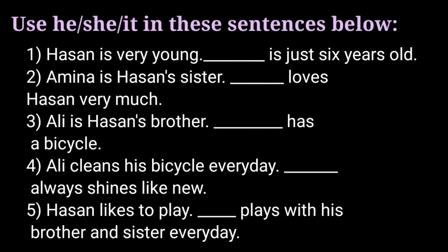See here. First question: Azan is very young. Dash is just 6 years old. Azan is the name of a boy. We know that if it is a boy, we have to use he. We use he for a man or a boy. So Azan here is a boy, so the answer is he. Read it again: Azan is very young. He is just 6 years old.